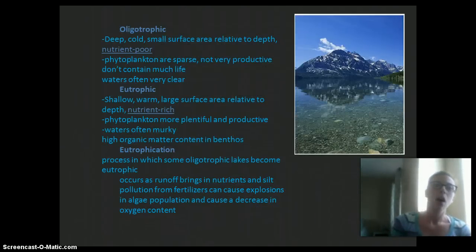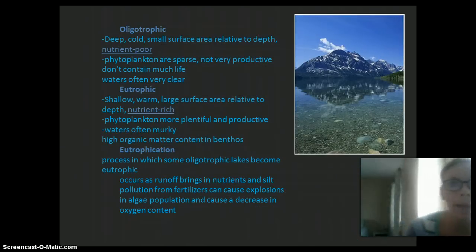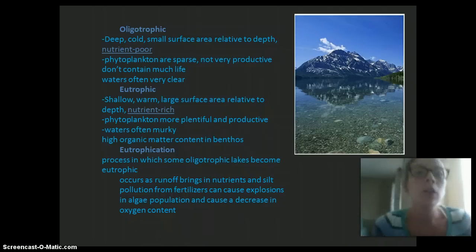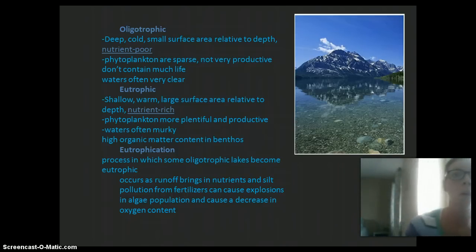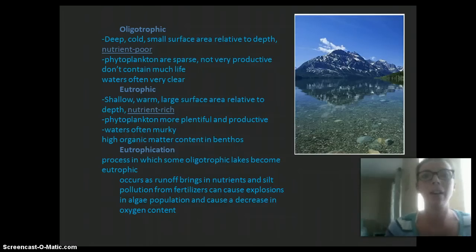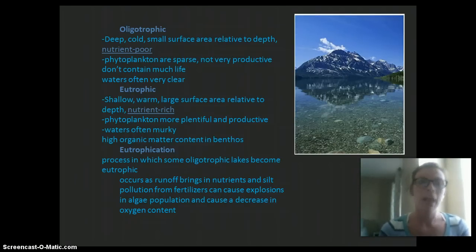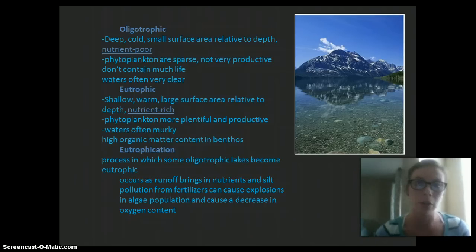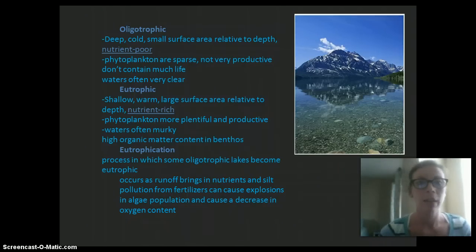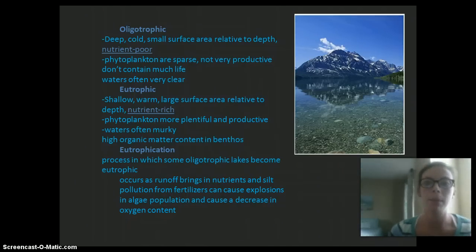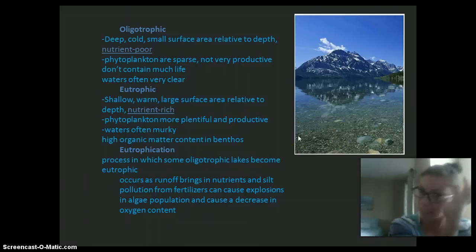Lakes can be really impacted by the amount of nutrients in the water. Oligotrophic lakes are deep, cold lakes with a small surface area relative to depth and they are nutrient poor. There's not much phytoplankton, and since phytoplankton are the producers, these lakes are not very productive. The water is quite clear — this is an example of an oligotrophic lake, and you can see it's very clear.